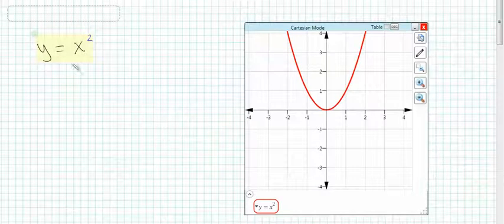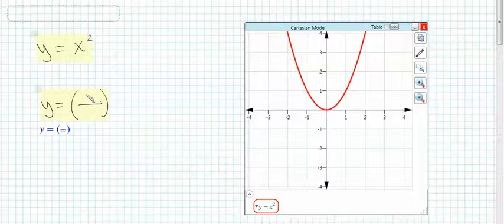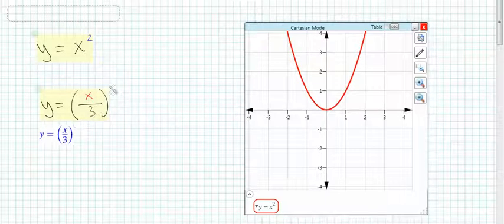Let's look at scale changes. We of course know what the graph of y equals x squared looks like by now. Let's see what happens when we replace x with x divided by 3.